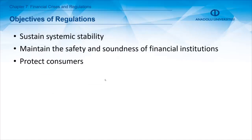The main objectives of regulations include sustaining systemic stability and maintaining the safety and soundness of financial institutions, which is crucial for the effective functioning of the financial system. The main objectives of regulations also include protecting financial consumers from various threats.